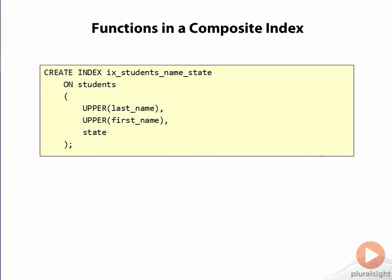Finally, know that with function-based indexes, you aren't just limited to a single column, but you can mix and match in composite indexes however you like. In this example, both the last name and first name make use of the upper function, because that makes sense for those columns so they can both be searched in a case-insensitive manner. But the state column in the index is just a normal column.